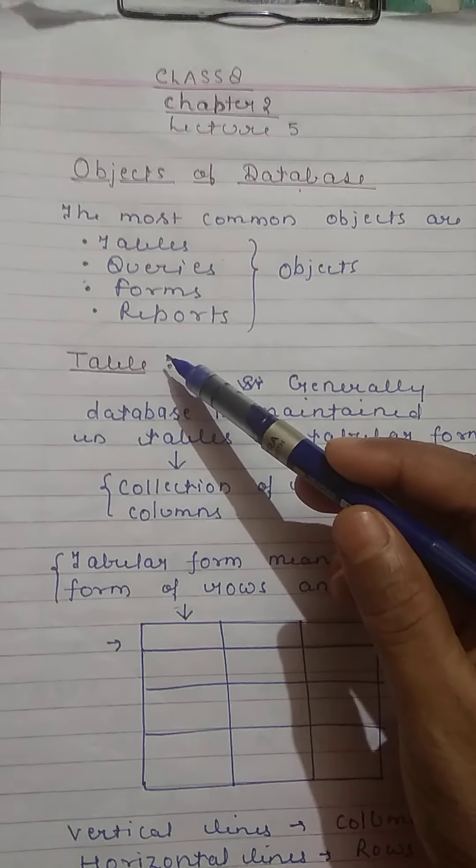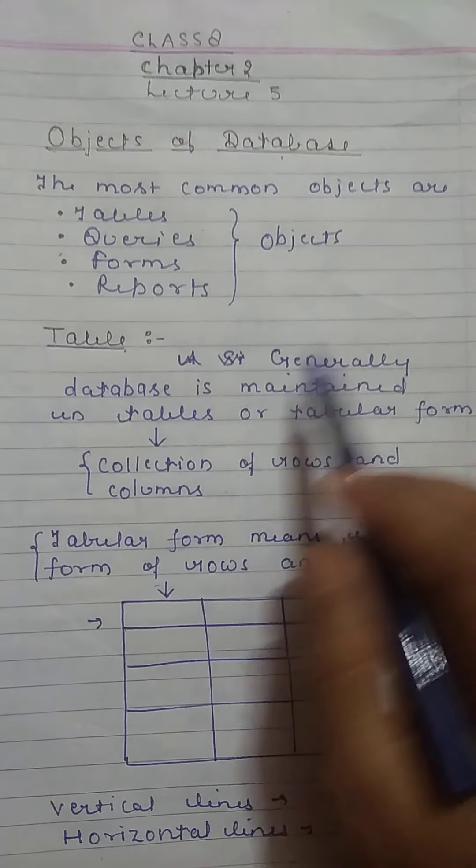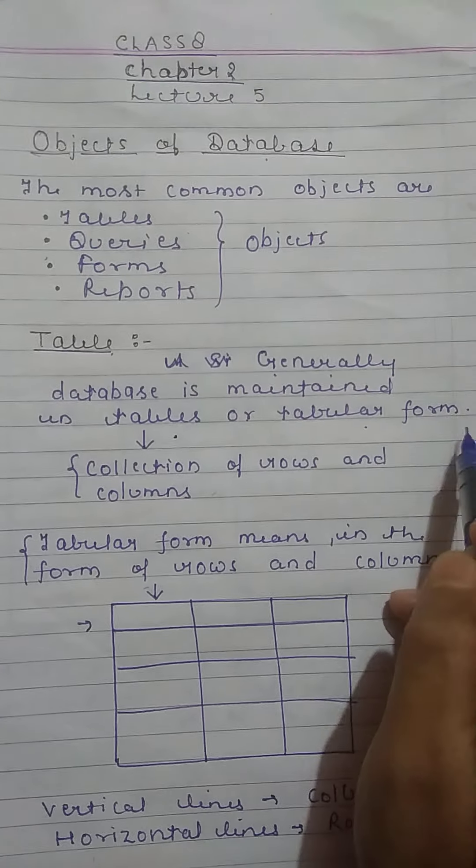The first object of a database is the table. Generally, database is maintained in tables or tabular form.